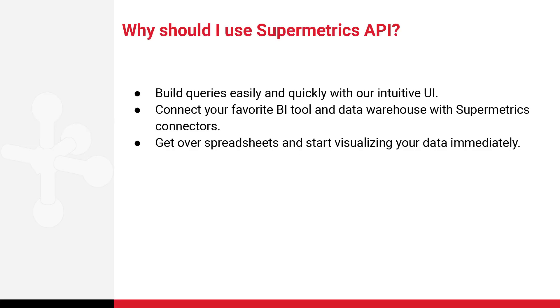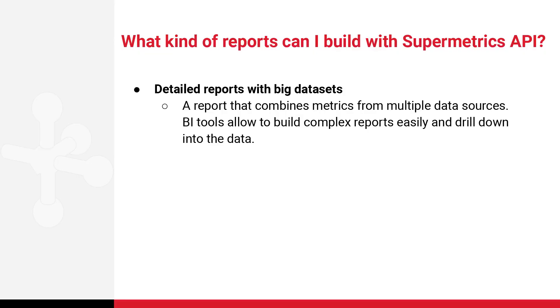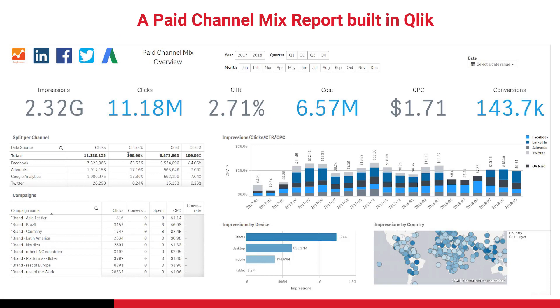Why should marketers use Supermetrics API? First, it helps build queries easily and quickly with a very intuitive UI, more or less similar to the add-on sidebar in Google Sheets. You can connect your favorite BI tool and data warehouse with Supermetrics Connectors to get more granular data. You can also get over spreadsheet row limitations and start visualizing data immediately. Supermetrics API is great for detailed reports with large datasets in platforms like Qlik, Tableau, or Power BI — including reports that combine metrics from multiple data sources.